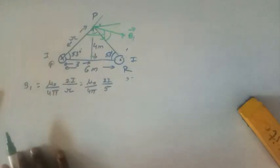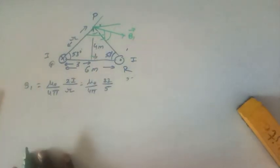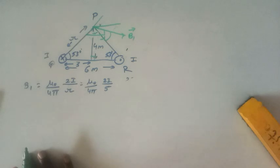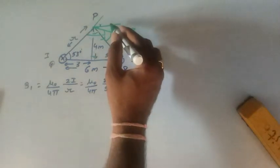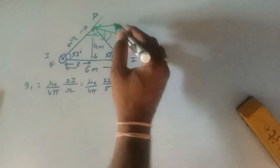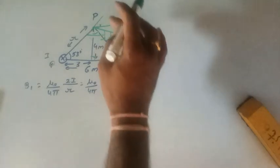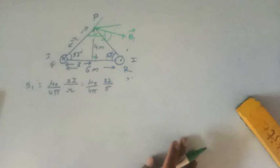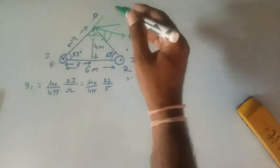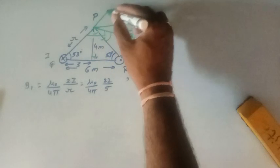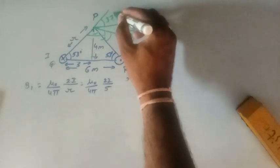The magnetic field B₁ acts perpendicular to the line from the wire to P. Extending the geometry: the angle between B₁ and the horizontal involves working through the triangle angles. With the 53° angle given and the perpendicular at 90°, the remaining angle is 37°. The complete angle formed is 74°, and the angle B₁ makes with the horizontal is 90° - 74° = 16°. Therefore, the angle B₁ makes with the line joining the two wires is 37°.